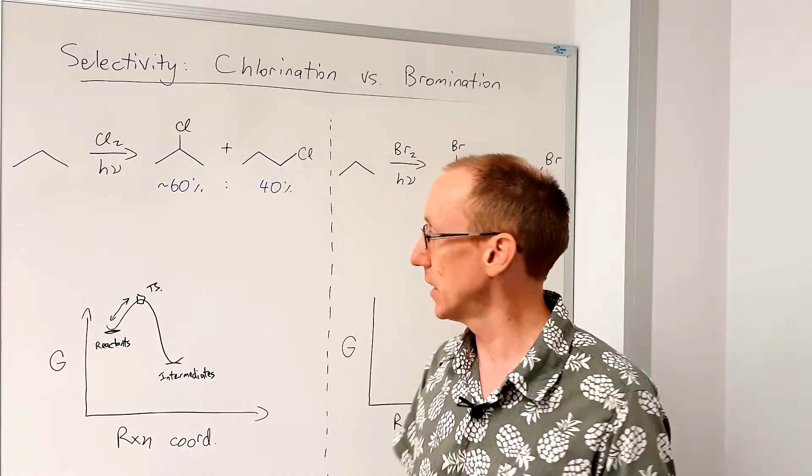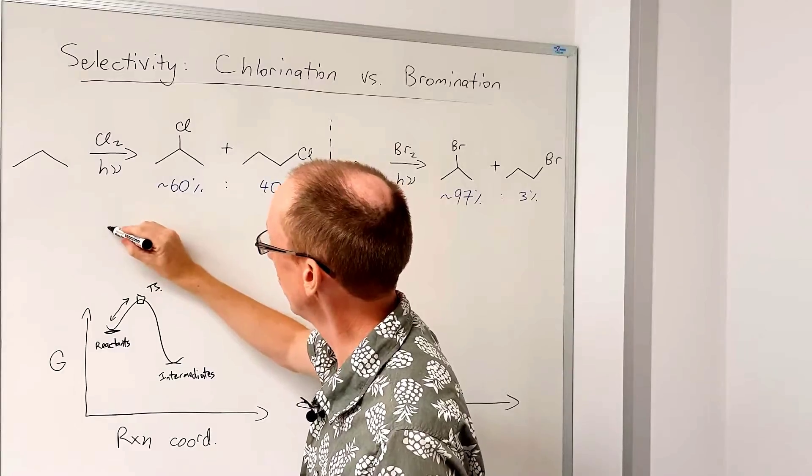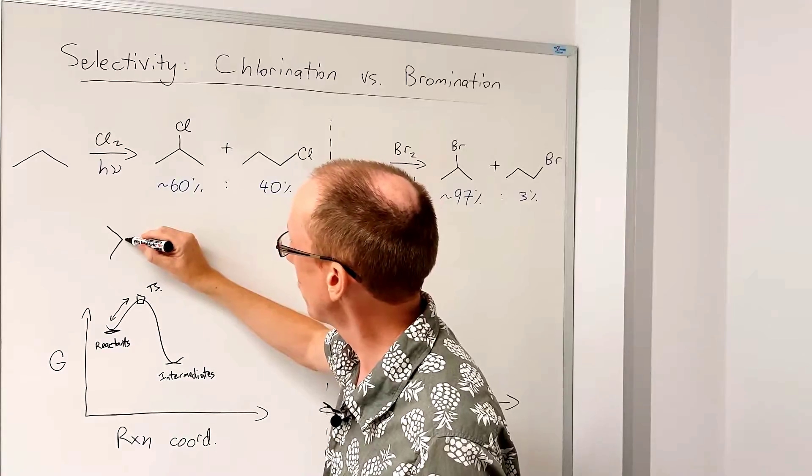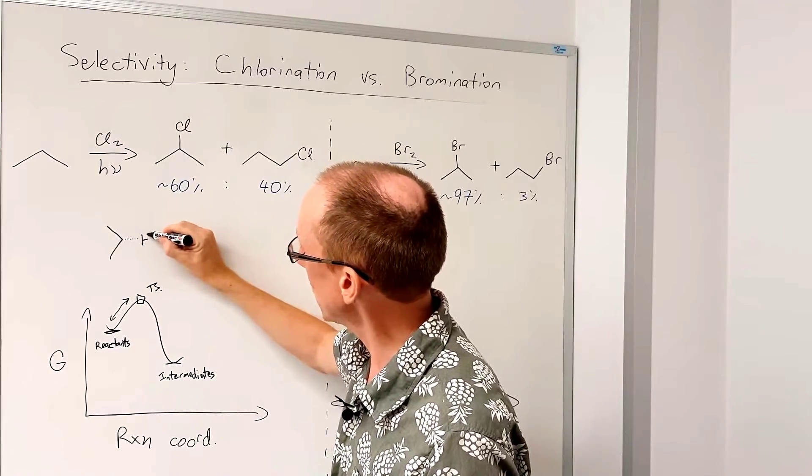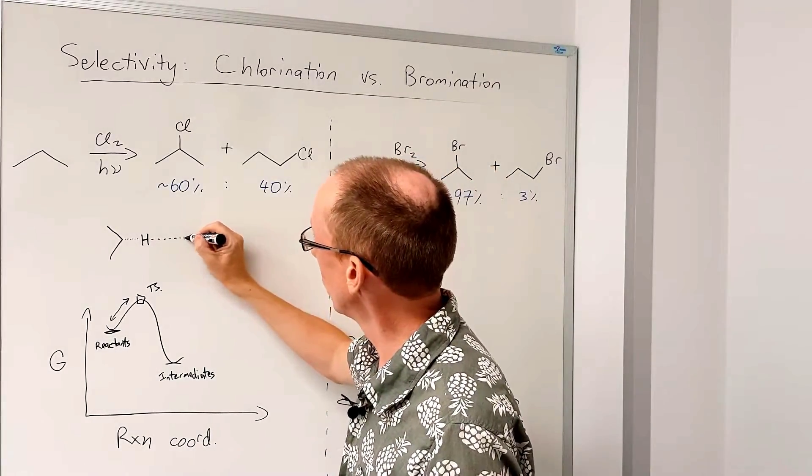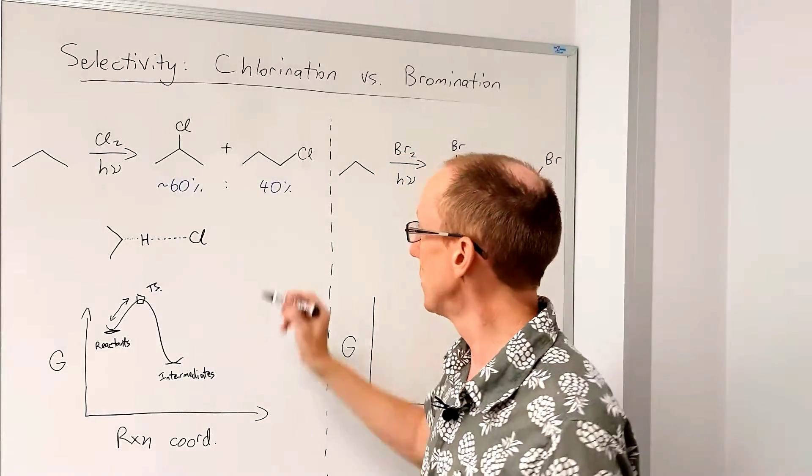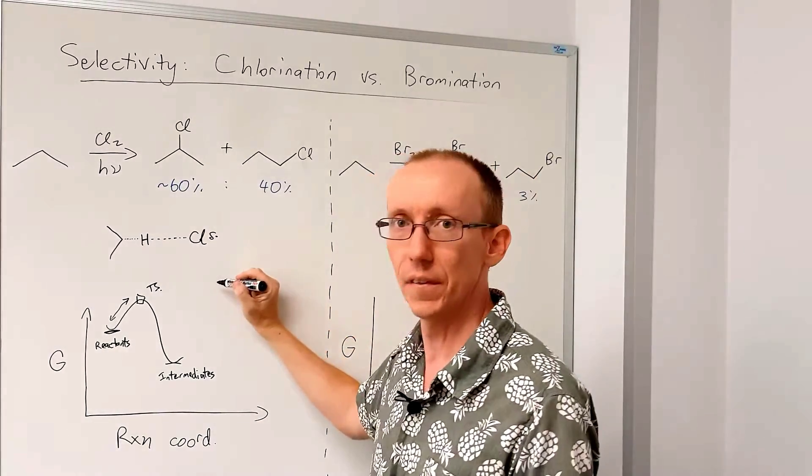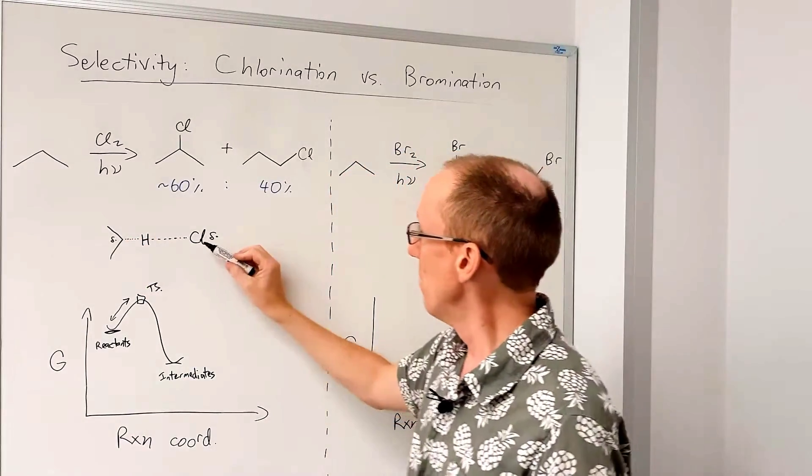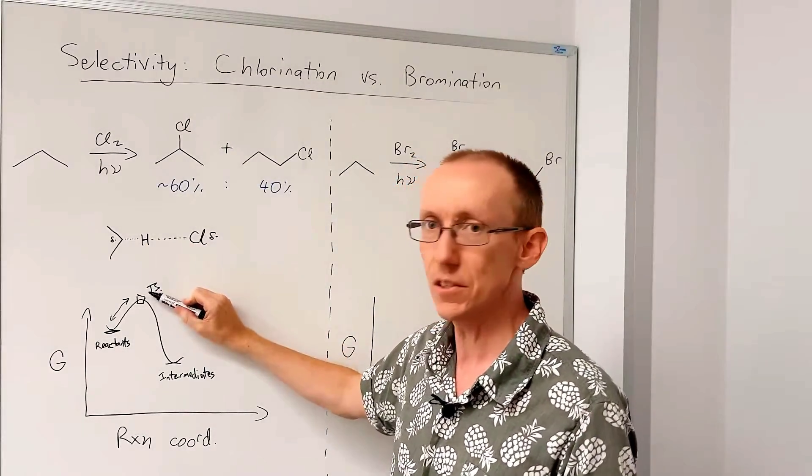So if we look at our chlorination of the secondary position, we're going to have something that looks much like our CH bond as it's not been broken yet, and then a very long developing hydrogen chlorine bond, and then some partial radical character on the chlorine and partial radical character on the carbon. But there's going to be very little radical character developing at the transition state.